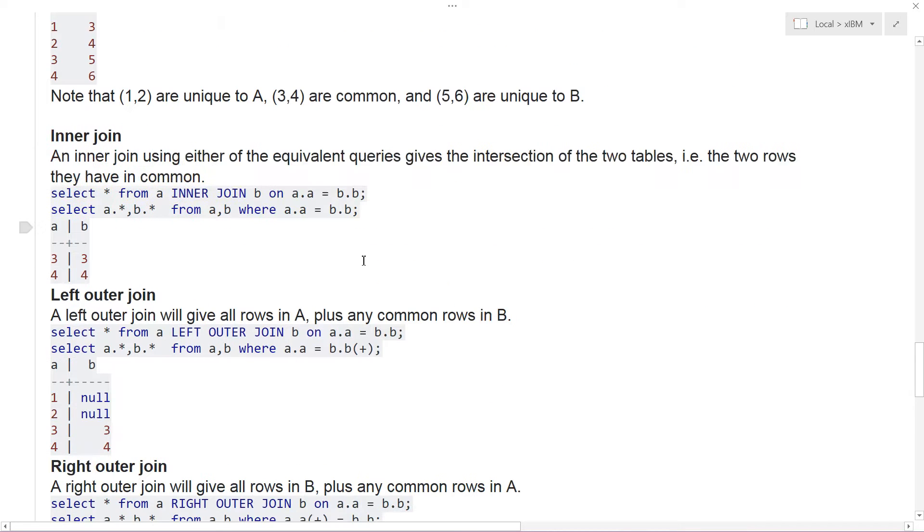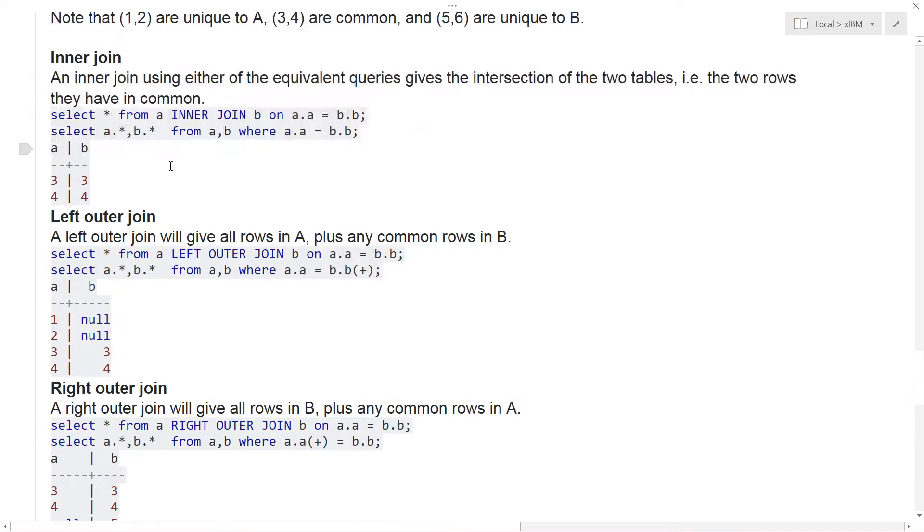So if you do an inner join, you're going to have something that looks like this. An inner join using either of the equivalent queries gives the intersection of the two tables, that is the two rows that they have in common, which is three and four. So SELECT star, which is every column, from A, that's table A, inner join B on A.A equals B.B, and this is what you get. You get three and four because that was the inner part.